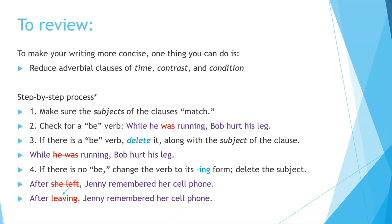To review: to make your writing more concise, reduce adverbial clauses of time, contrast, and condition. Here's the step-by-step process. First, make sure the subjects of the clauses match. Then check for a be-verb — for example, 'while he was running, Bob hurt his leg' — the be-verb is 'was.' If there is a be-verb, delete it along with the subject: 'while running, Bob hurt his leg.' If there is no be-verb, change the verb to its -ing form and delete the subject — for example, 'after she left, Jenny remembered her cell phone' becomes 'after leaving, Jenny remembered her cell phone.'